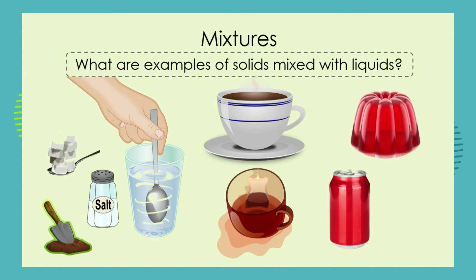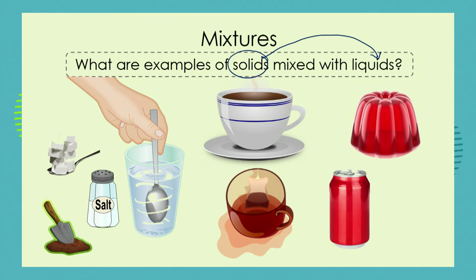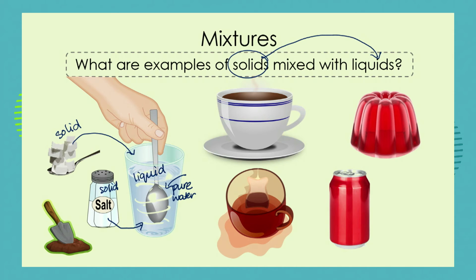We don't only combine solids with solids to make mixtures — we can also put solids into a liquid and make a mixture. You are very familiar with many solid-liquid mixtures. Let's have a look. We can take pure water — not tap water, but pure water — and add salt to it, giving us a solid-liquid mixture. We could add sugar to the water, and once again the sugar is a solid being added to the liquid to make a sugar water solution.